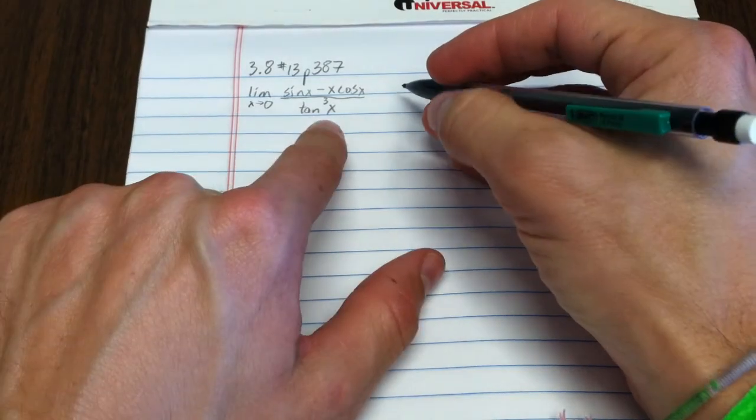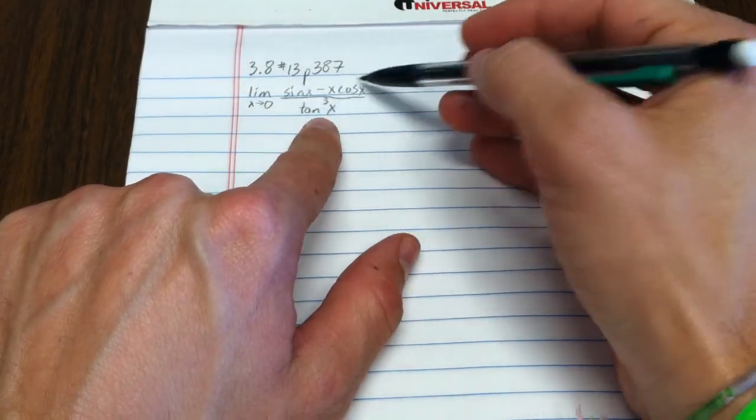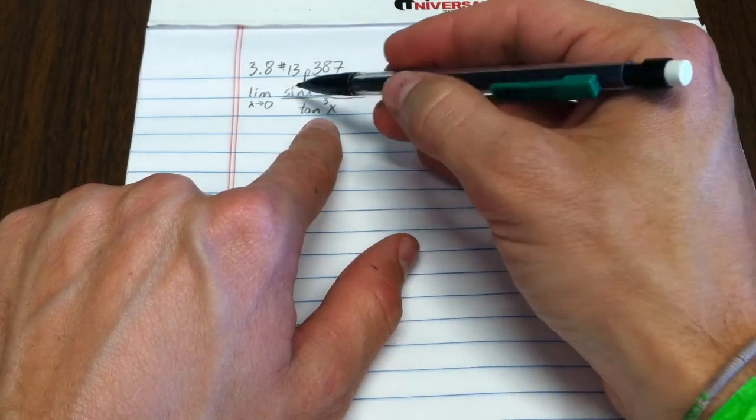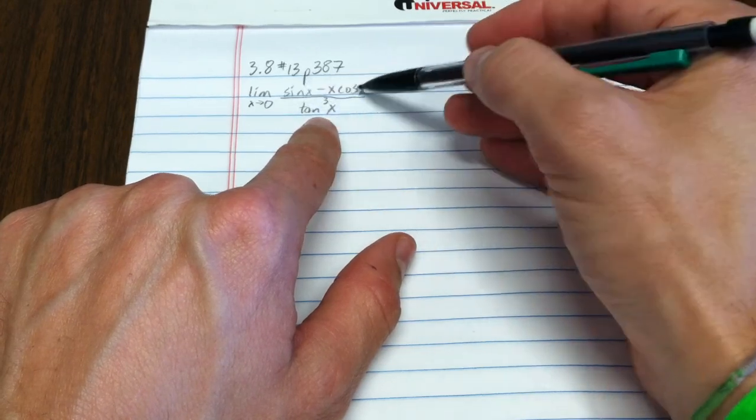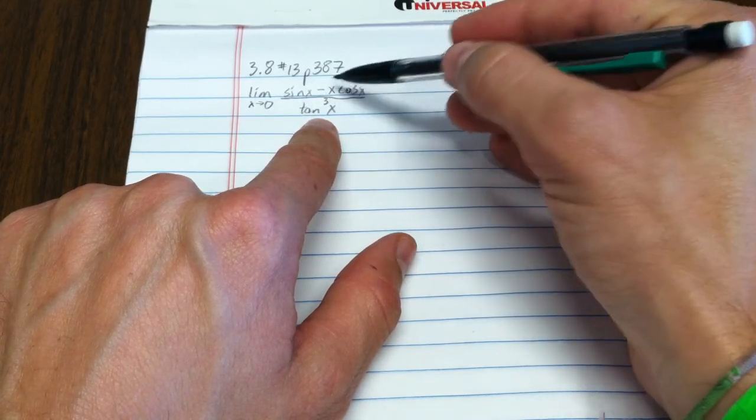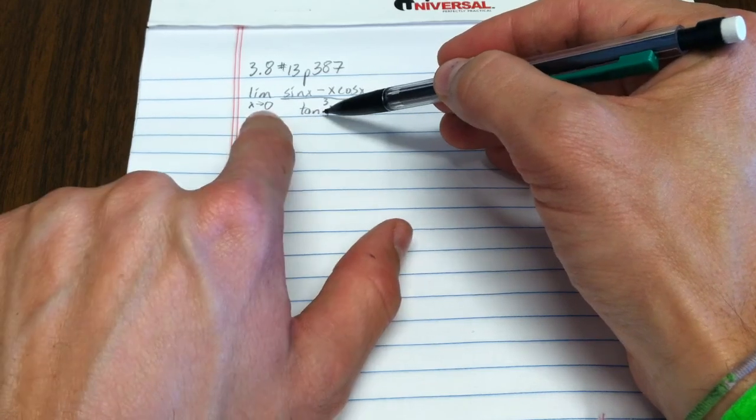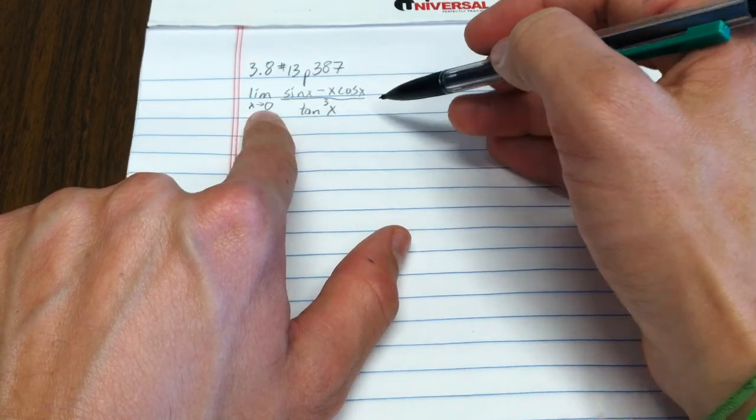Now the first observation I'd like to make is you could consider this an indeterminate form in and of itself. It is 0 minus 0 over 0 when x is substituted in, so that's indeterminate.